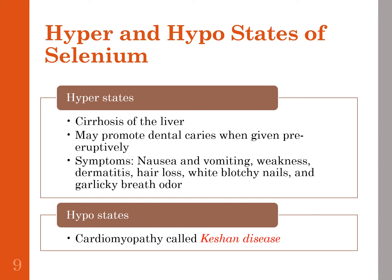Excessive selenium in the diet can lead to cirrhosis of the liver, and it may promote dental caries when given pre-eruptively by interfering with tooth mineralization during formation. Symptoms of too much selenium include nausea and vomiting, weakness, dermatitis, hair loss, white blotchy nails, and garlicky breath odor. Nausea and vomiting is that first key symptom of hyper selenium.